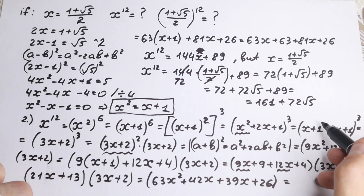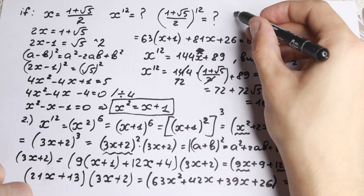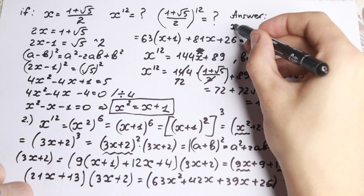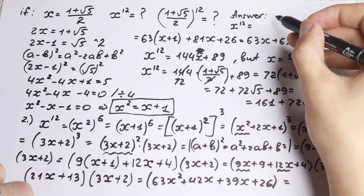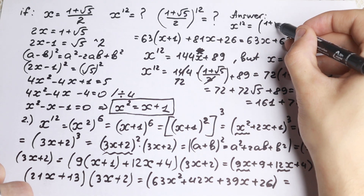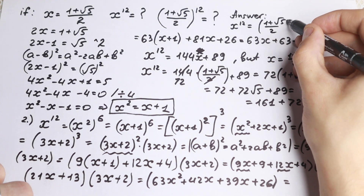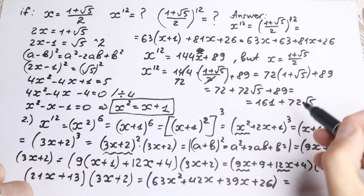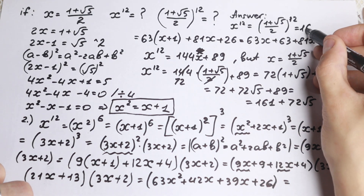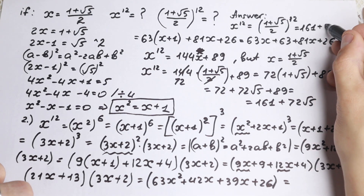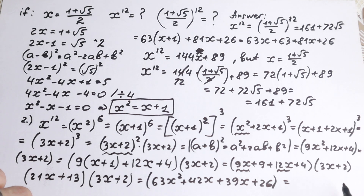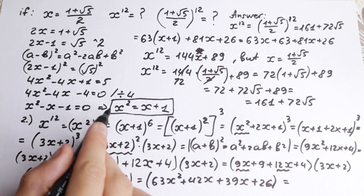Let's write this answer clearly: (1 plus square root of 5) over 2, raised to the 12th power, equals 161 plus 72 square root of 5. And finally, we solved it! As you can see, this is a complicated problem, but this is a really good trick — we can reduce our power by one, writing every square as x to the first power.